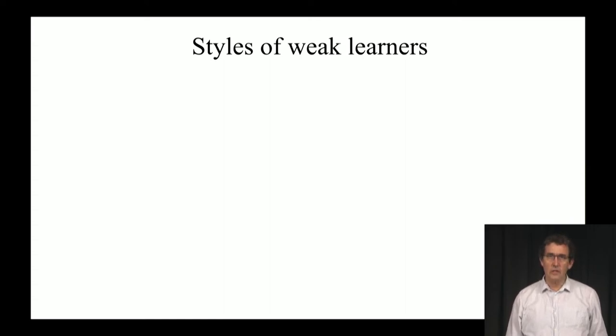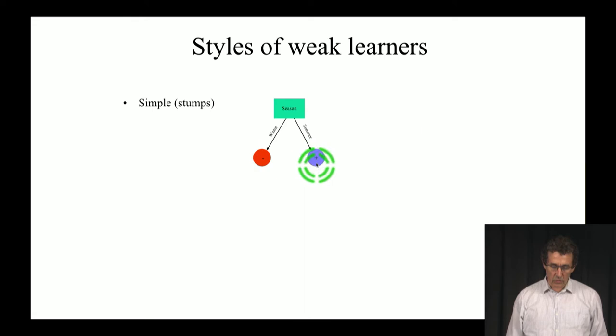Here are some styles of weak learners that are popular. One is very simple: stumps. These are decision trees that basically have just one decision rule at the top, and then they have two options, yes and no. One going to minus and one going to plus. When you have a decision rule like that, you get a weight for it. You get the alpha that multiplies it. Here is the alpha.